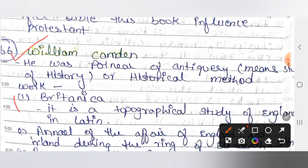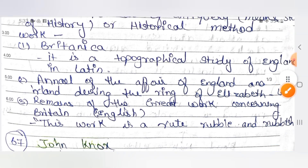The first work of William Camden is Britannica. This was written in Latin; he studied at Oxford. It is a topographical study of England in Latin. It is a county-by-county, great description of Britain as an island. By this work he produced a coherent picture of Great Britain.